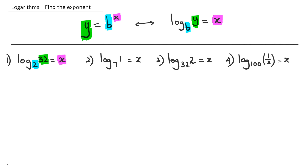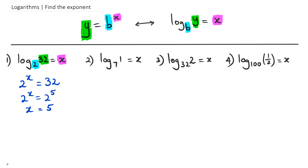Since I've picked easy numbers, we can write this as 2 to the power of x equals 32. We already know that 2 to the power of 5 equals 32, so we can rewrite this as 2 to the power of x equals 2 to the power of 5. Therefore x is equal to 5.